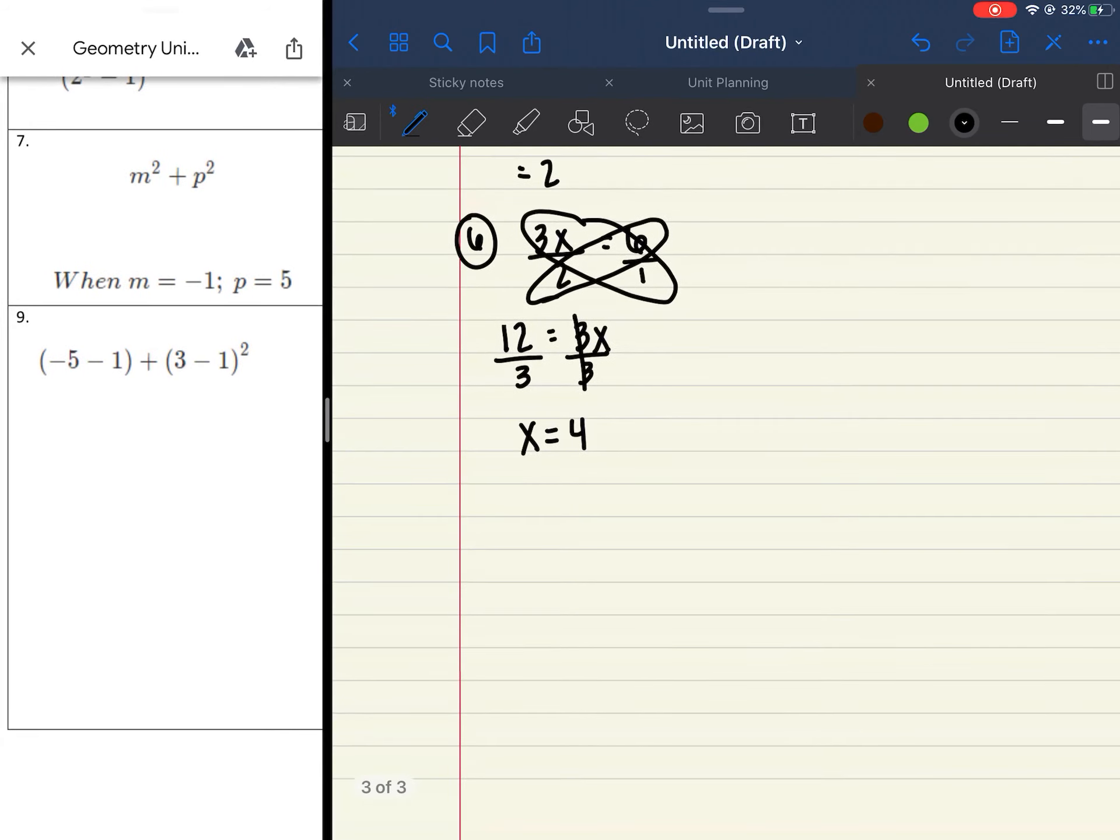Number 7, again, is another one where you have the expression you have to plug in. So we have m squared plus p squared, where m is equal to negative 1, and p is equal to 5. So we have to put that in parentheses, so negative 1 squared plus 5 squared. Negative 1 times negative 1 gives us a positive 1, plus 5 times 5 gives us a 25. And your last step, 1 plus 25 is 26.